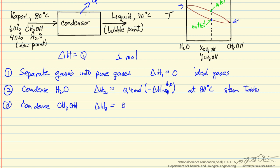Then the same thing for methanol, but we have 6 tenths of a mole of methanol minus delta H of vaporization of methanol, again at 80 degrees C, and we need a source for this that we would have to look up somewhere.